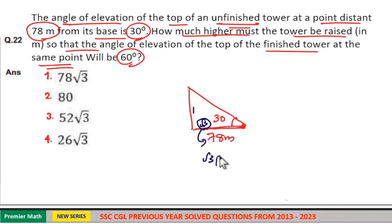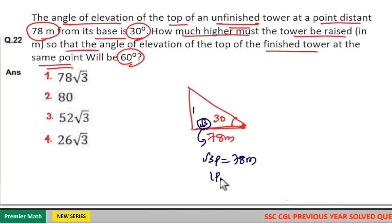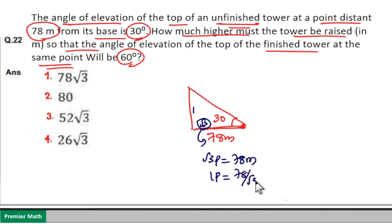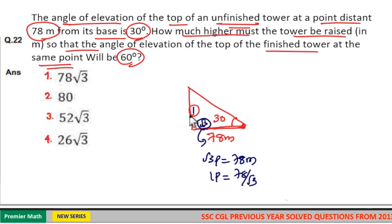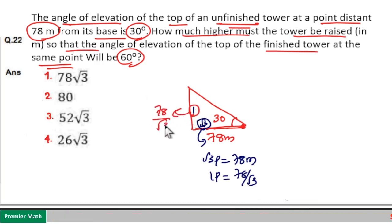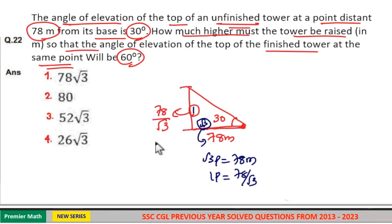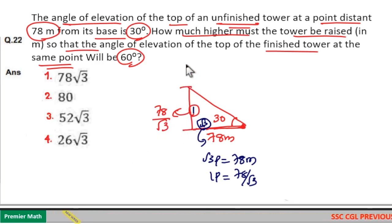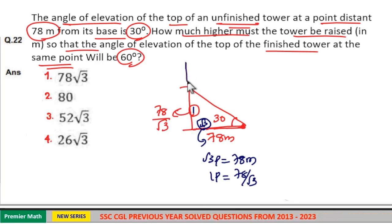If the √3 part is 78 meters, then 1 part is equal to 78/√3. So the height of the unfinished tower is equal to 78/√3. Now this tower should be raised to a new height H.